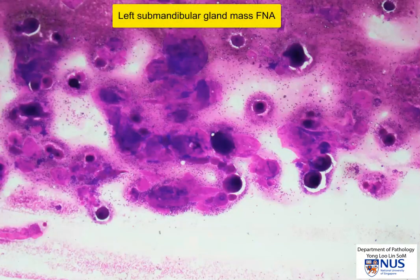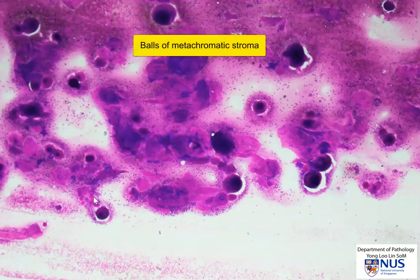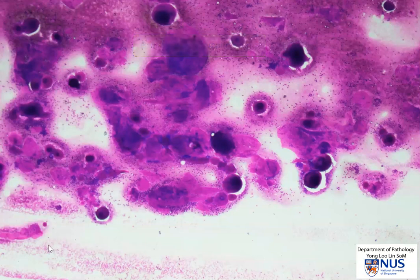Here is an FNA of a left submandibular gland mass, and at this magnification, we can see that there are a lot of these metachromatic balls of stromal material, and in between the balls, we can see some cells.